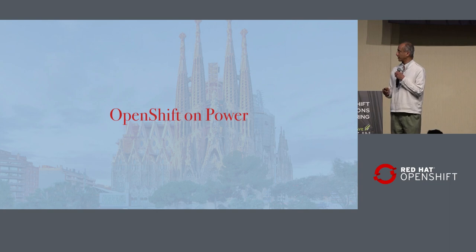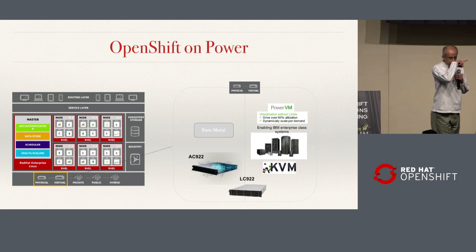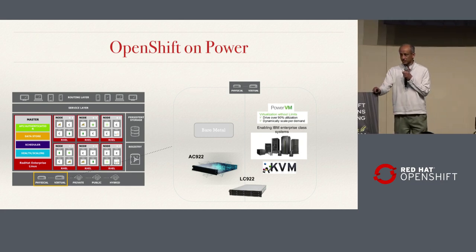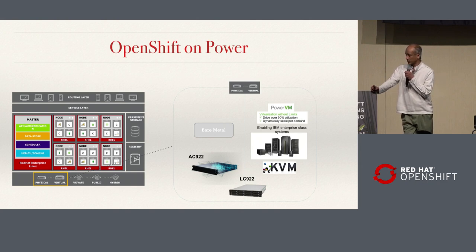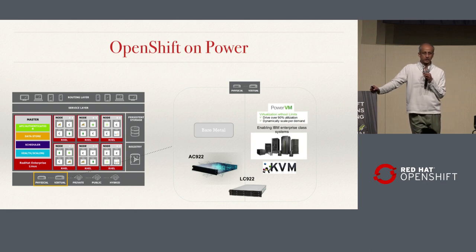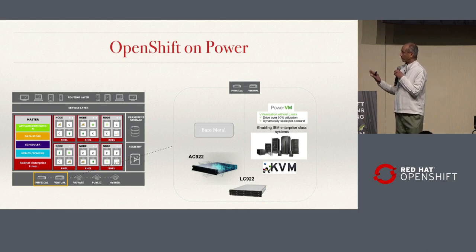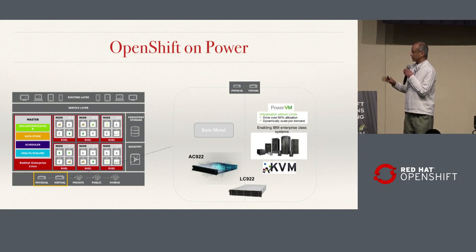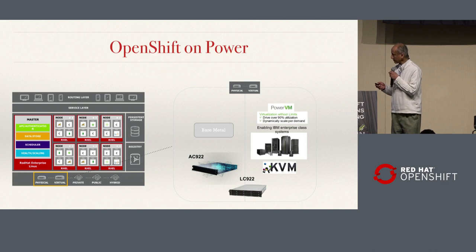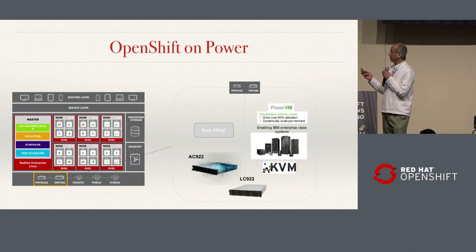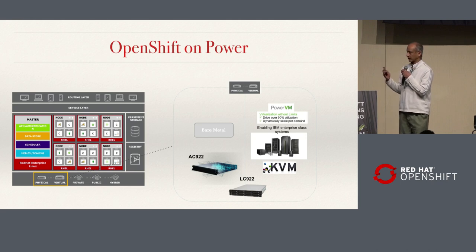Specifically about OpenShift on Power and that partnership: we have OpenShift 3.10 and 3.11. The first release, 3.10, was available in October of last year, and then 3.11 came a couple of months after in December. We're working in partnership with Red Hat to bring 4.x to Power as well, but we weren't able to make that initial release, so 4.2 will be the first release available on Power. In this picture, I show what kind of systems would run it.